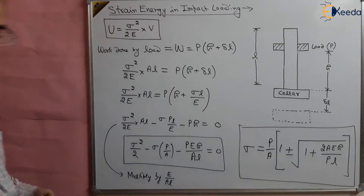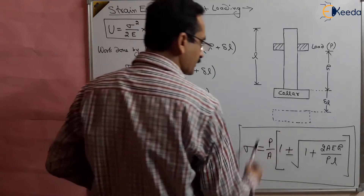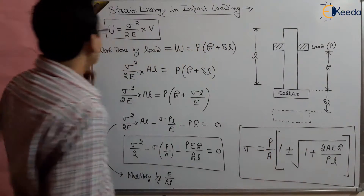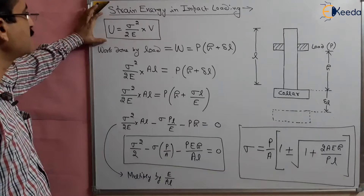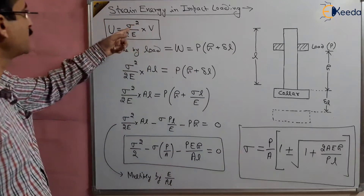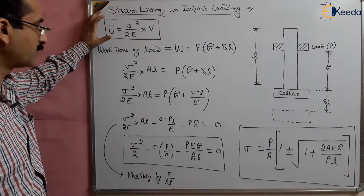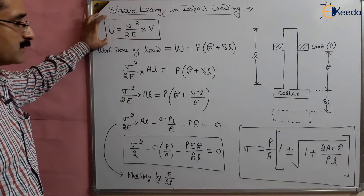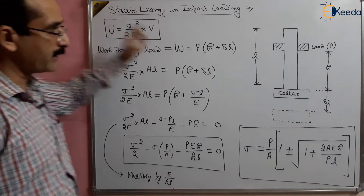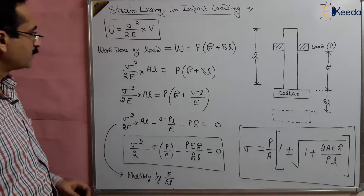This is the stress you need to remember: sigma equals P over A times (1 plus or minus root of (1 plus 2AEh over PL)). This stress can further be used to find out the total strain energy. This is how we find the strain energy stored and the stress developed in the bar due to impact loading.